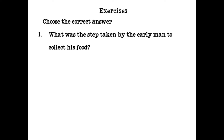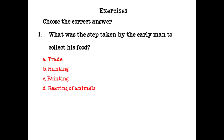Choose the correct answer. What was the step taken by the early man to collect his food? The options are trade, hunting, painting, rearing of animals. The answer is hunting.